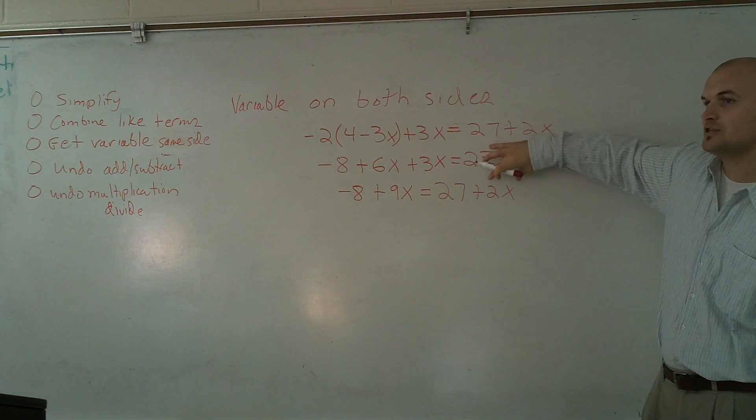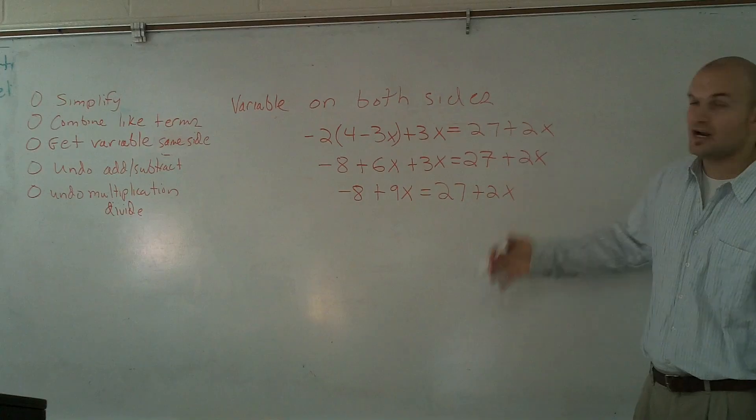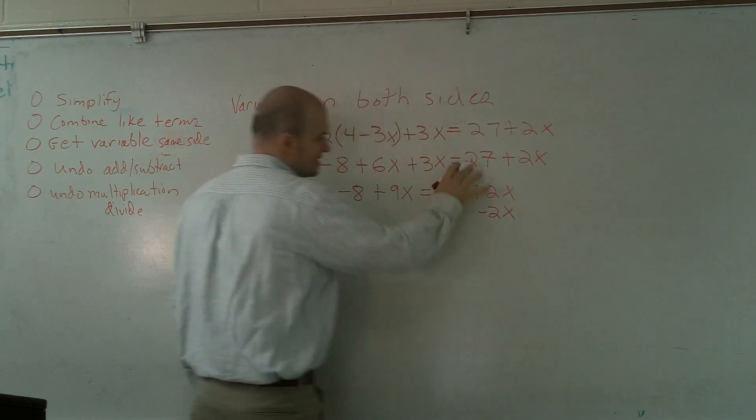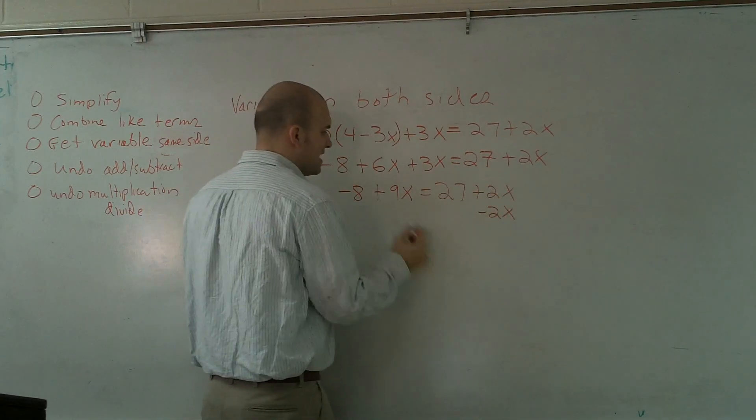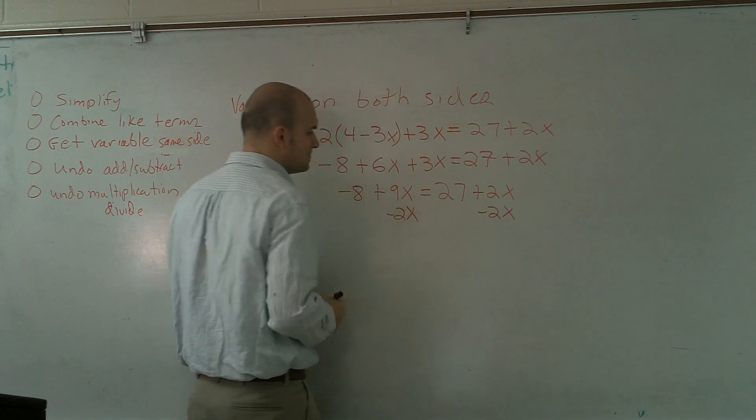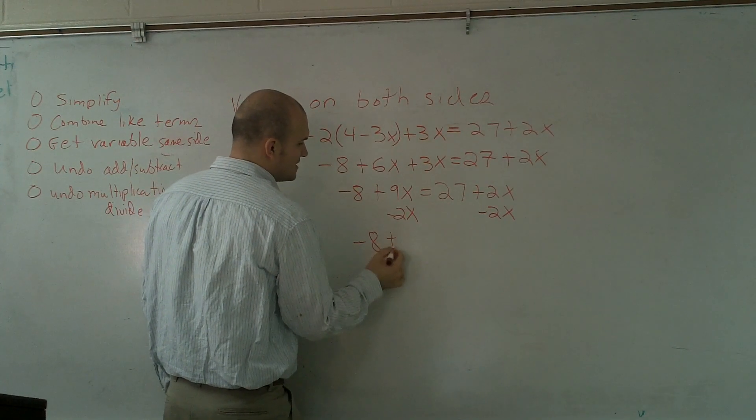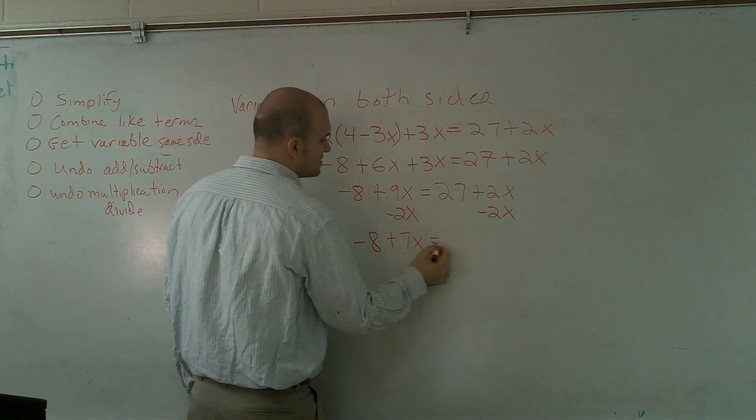Since this is a positive 2x on the right side, to get rid of it, I need to subtract 2x. That's going to cancel that out to 0. Whatever I do on one side, I have to do on the other side. Therefore, now I obtain negative 8 plus 7x equals 27.